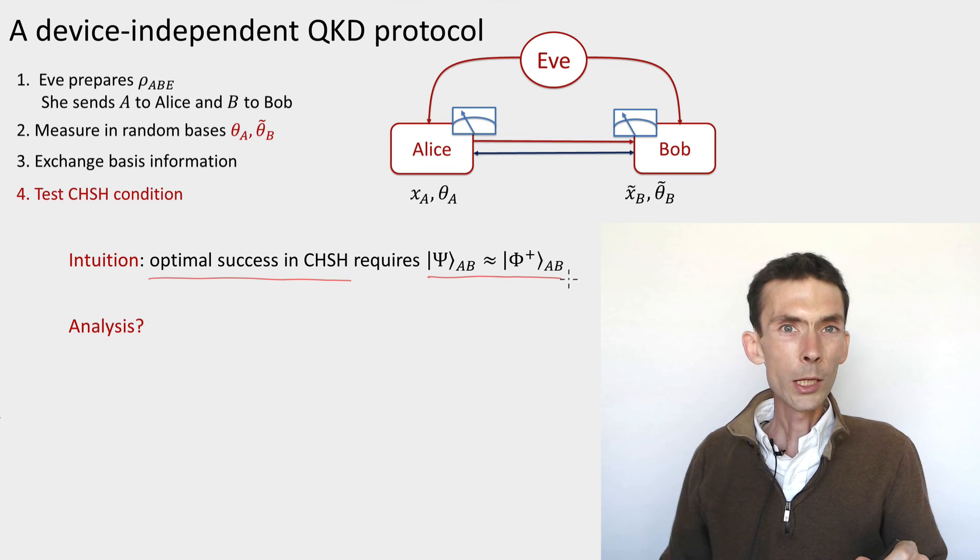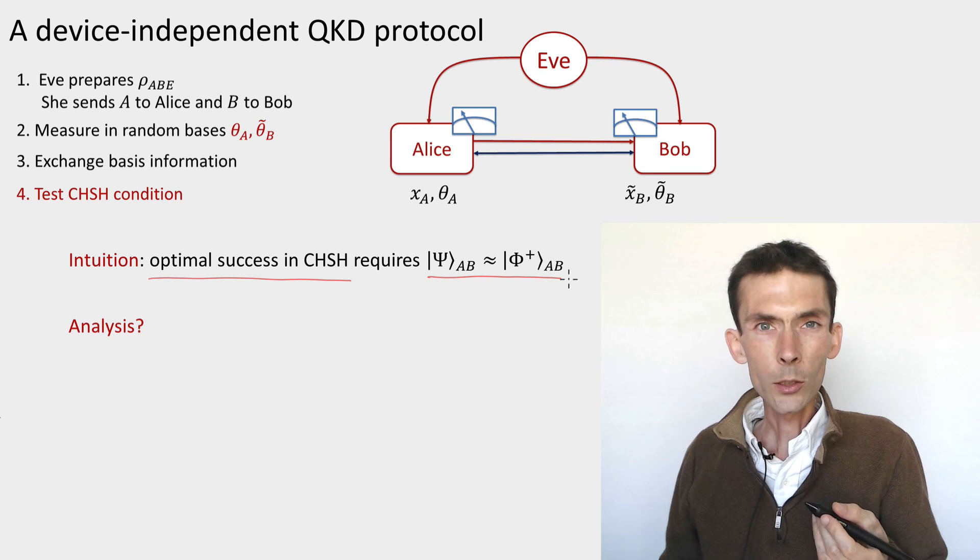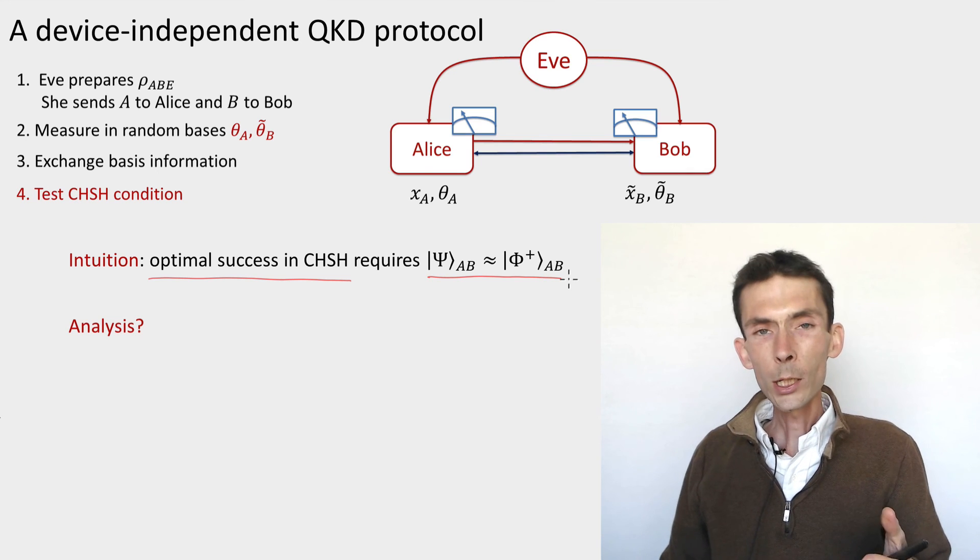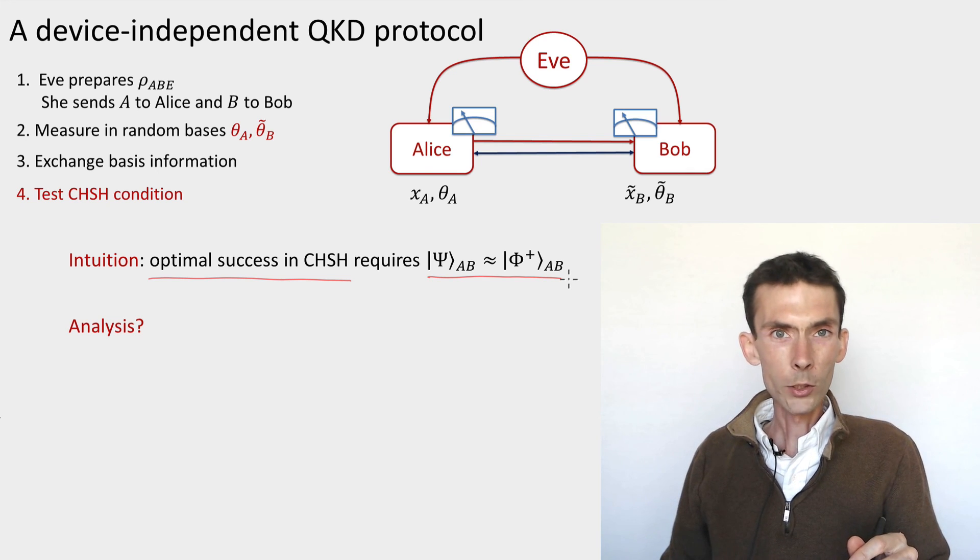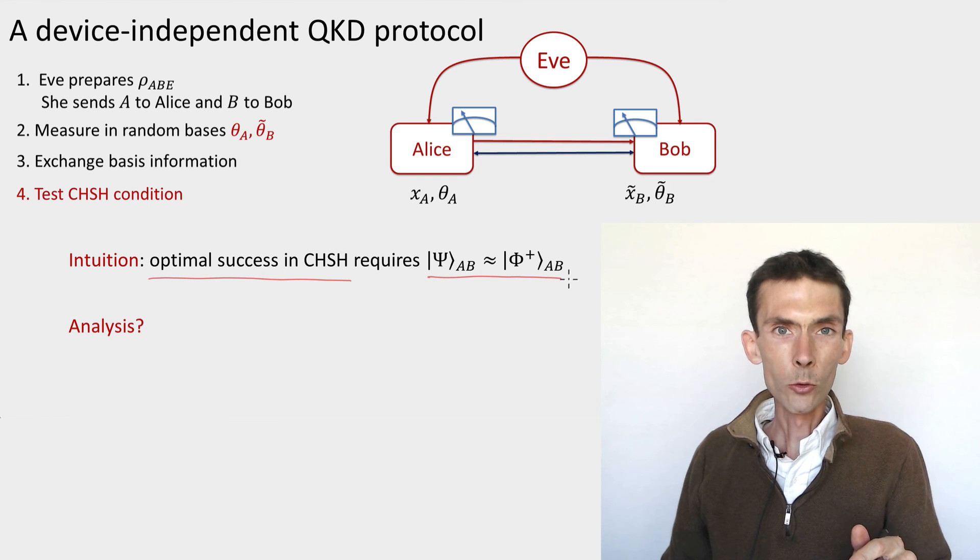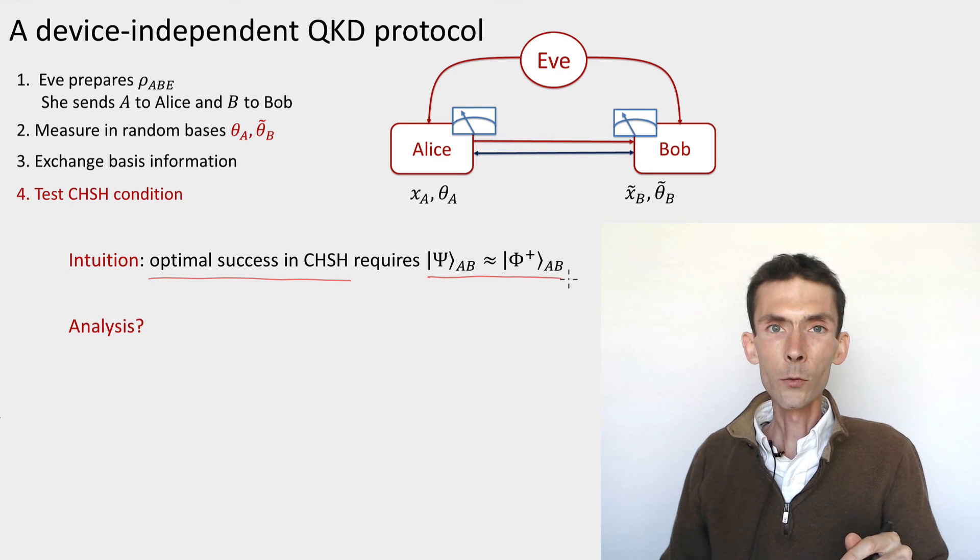And as for the case of the BB84 purified protocol, we don't really want to implement this intuition because it's too strong compared to what we really need and would give us worse parameters. What we really need, given that we're going to apply privacy amplification, is a bound on the min entropy of Alice's and Bob's raw key bits. So we want a bound on Eve's guessing probability. Remember how earlier we had done this by analyzing a tripartite guessing game that involved Alice, Bob and Eve.